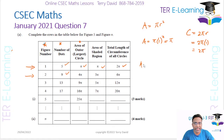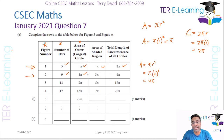So the area is π × 2² = 4π. That's where the 4π in the table came from.